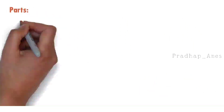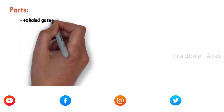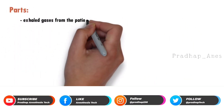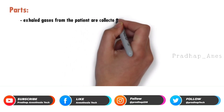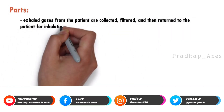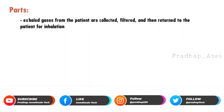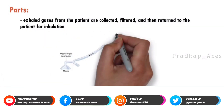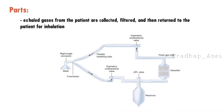In a closed breathing circuit, the exhaled gases from the patient are collected, filtered, and then returned to the patient for inhalation. The circuit typically consists of various components, including a breathing tube, connectors, valves, filters, and a breathing bag or reservoir.